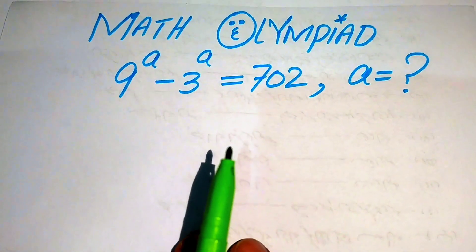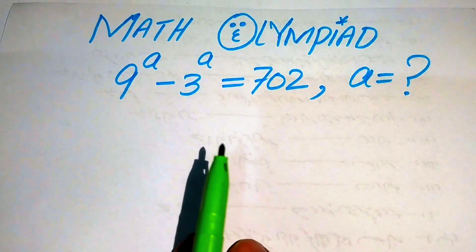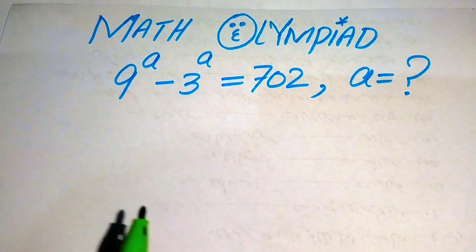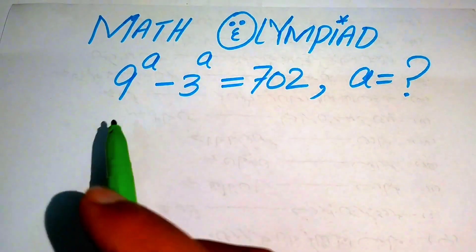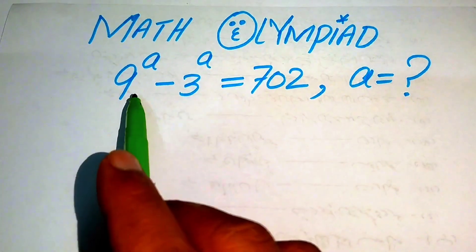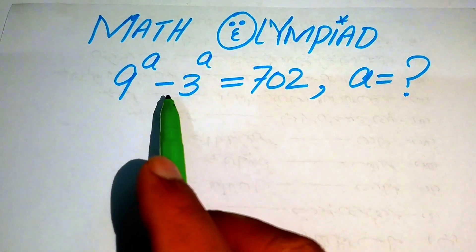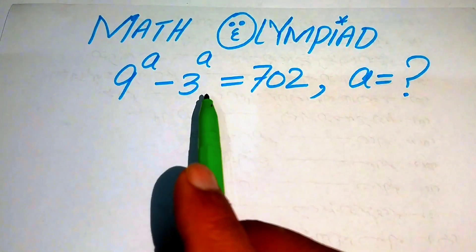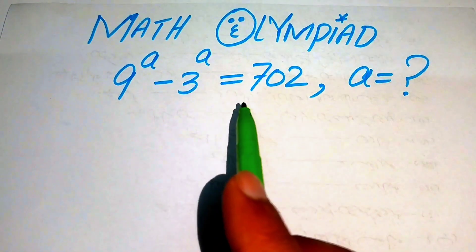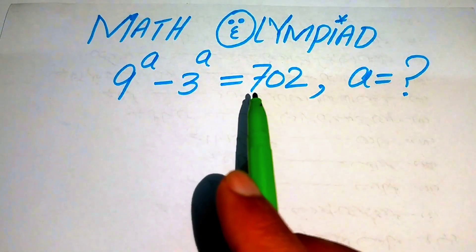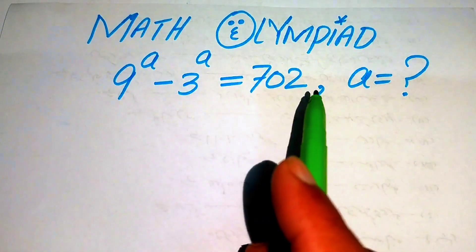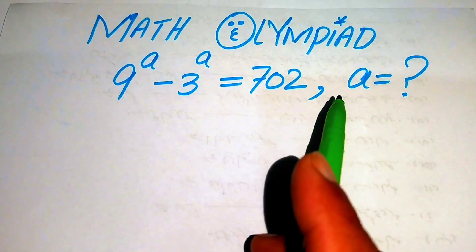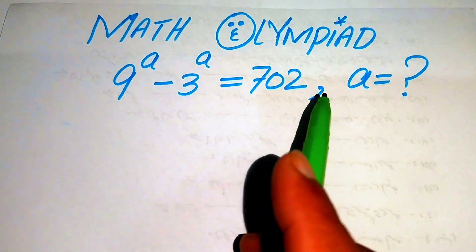Hello everyone, welcome to solve this math lumped exponential equation problem. Here we have 9 to the power of a minus 3 to the power of a equals to 702, and we need to find the values of a.